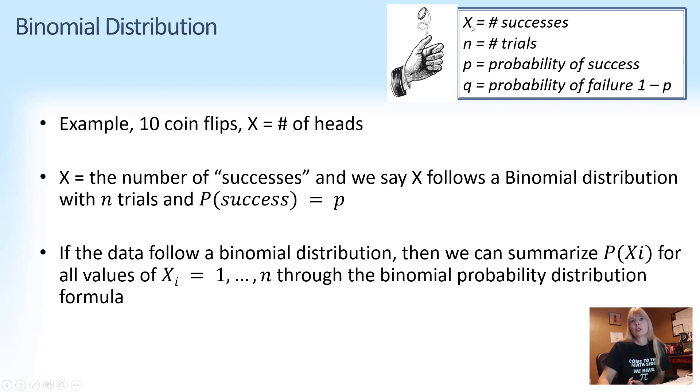Now notice up here, our random variable. So how many times did we get heads, number of successes. I still kind of call this sample size, same thing, but number of trials. P, probability of success. Some websites you will see will use Q for probability of failure, but it's just 1 minus P.